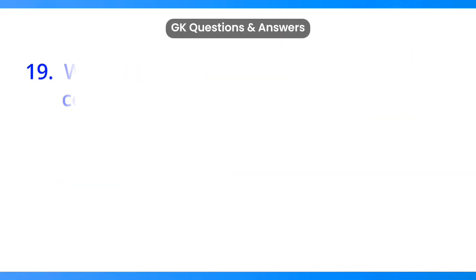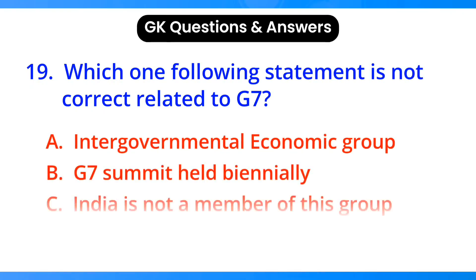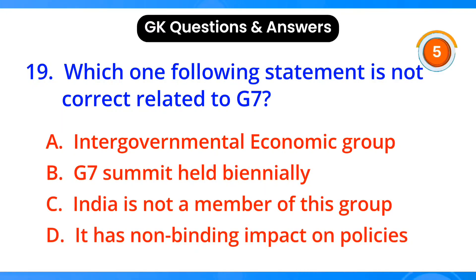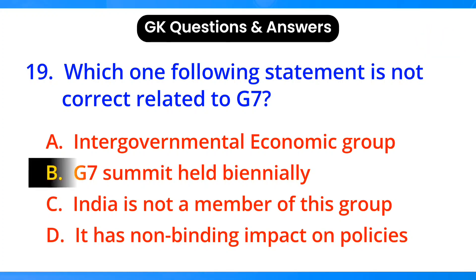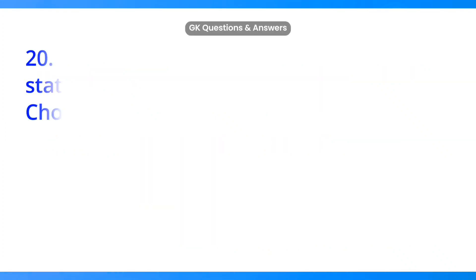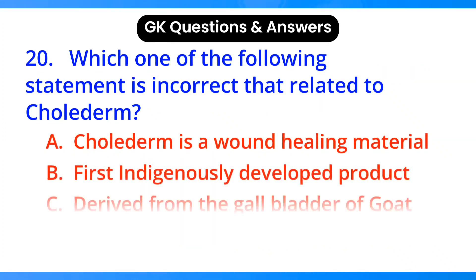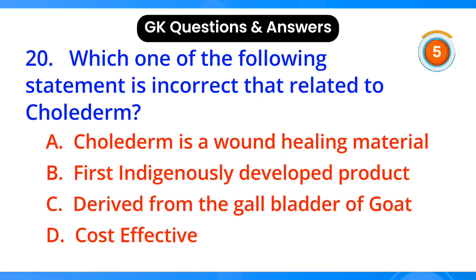Which one of the following statements is not correct related to G7? Answer: option B, the G7 summit is held biennially.